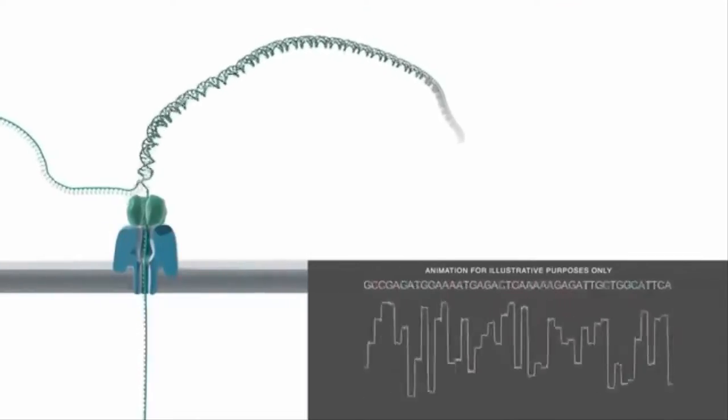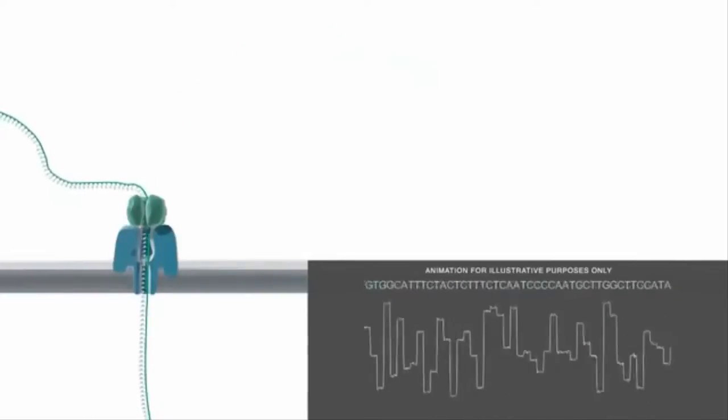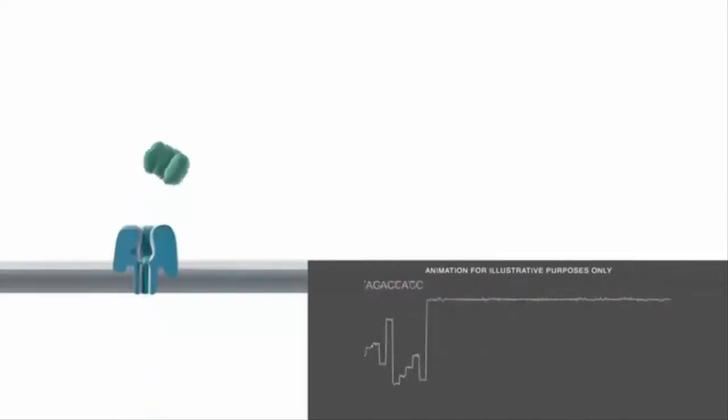By preparing the DNA so it has a hairpin structure at its end, the system can read both strands, that is the sense and antisense strands of the DNA. This gives advantages in data analysis.